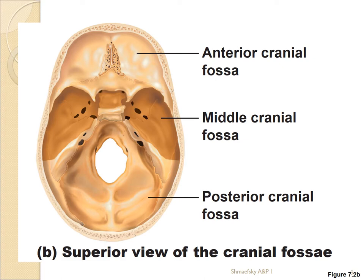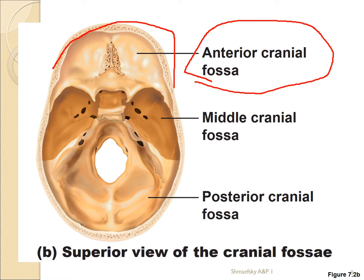Let us look at some different cut views, because you will be looking at cut skulls in class. Your skulls won't have colors like these diagrams, but pay attention to the sutures. Here we can see the frontal bone and the anterior cranial fossa — a bowl-shaped area where the frontal lobe of your brain resides. Then there's the ethmoid bone and the cribriform plate, where the olfactory nerve goes through for the ability to smell.